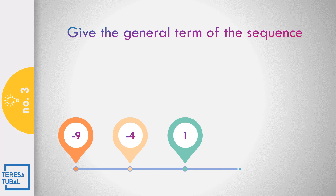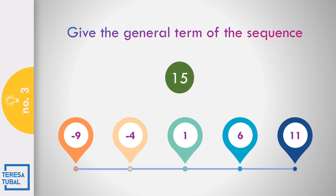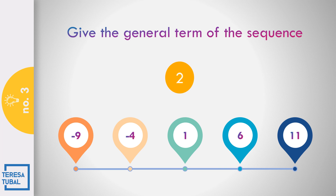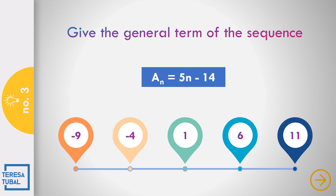Number 3: negative 9, negative 4, 1, 6, and 11. What is the general term of this arithmetic sequence? The answer is a sub n is equal to 5n minus 14.